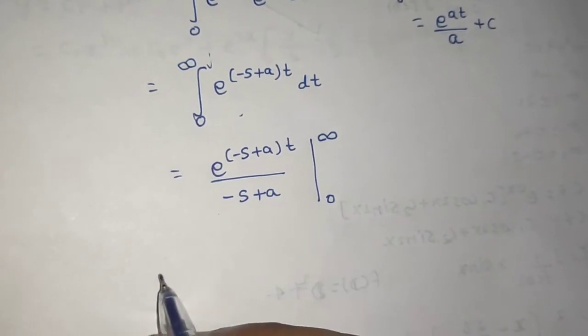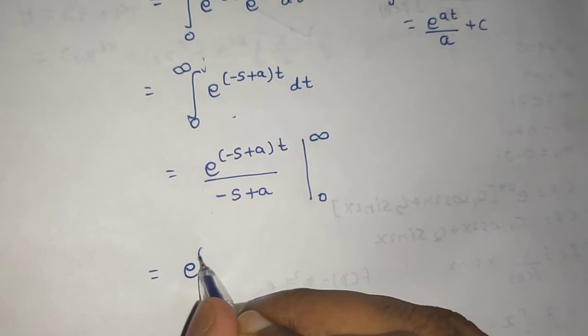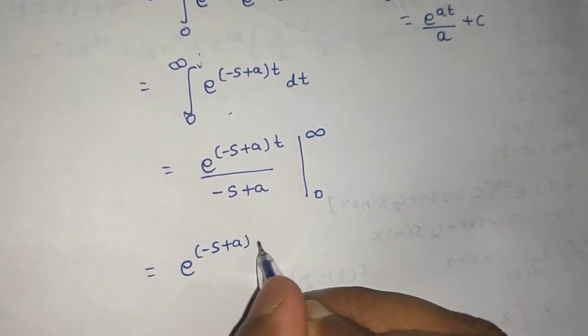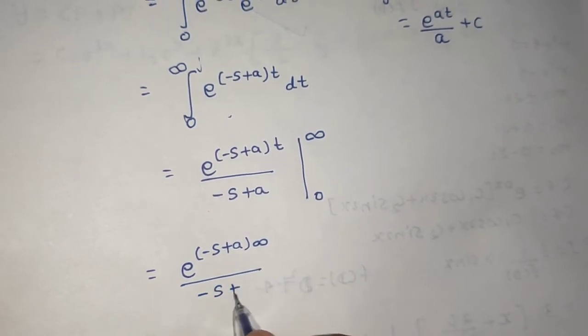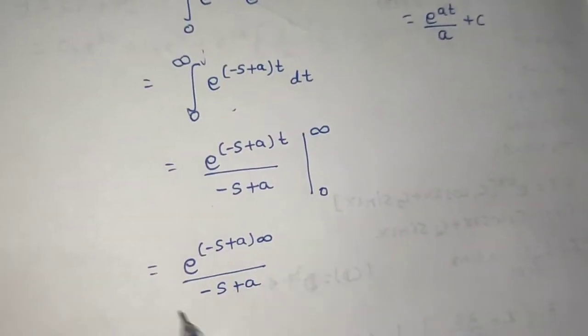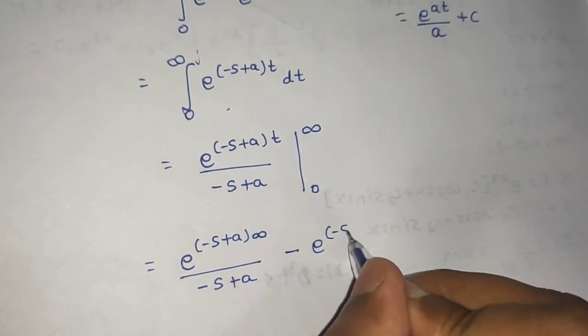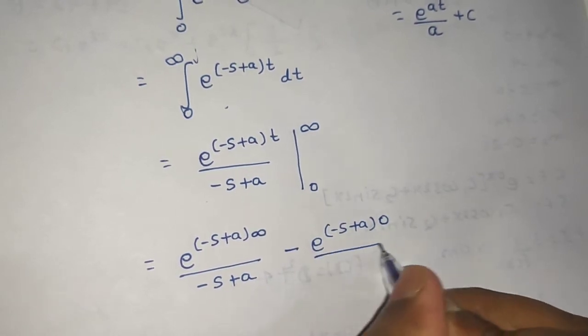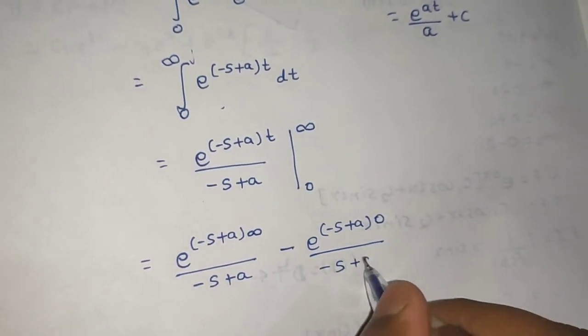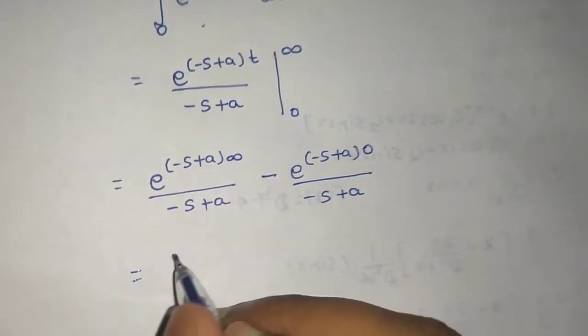Now, first I will put infinity in place of t. So, e power minus s plus a times infinity divided by minus s plus a. This is the upper limit minus the lower limit which is e power minus s plus a to 0 divided by minus s plus a. Now, look at here.